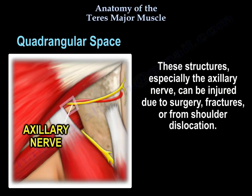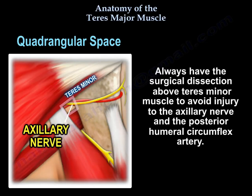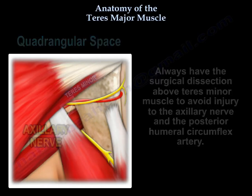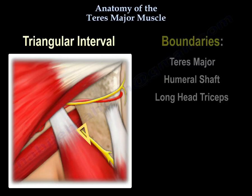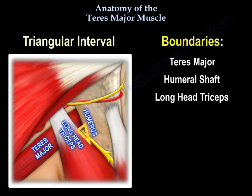The contents of the quadrangular space are the axillary nerve and the posterior humeral circumflex artery. These structures, especially the axillary nerve, can be injured from surgery, fractures, or shoulder dislocation. Always keep the surgical dissection above the teres minor muscle to avoid injury to the axillary nerve and posterior humeral circumflex artery.